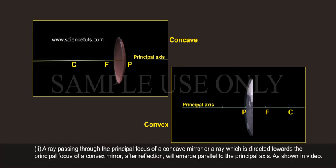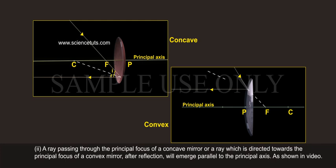Second, a ray passing through the principal focus of a concave mirror or a ray which is directed towards the principal focus of a convex mirror after reflection will emerge parallel to the principal axis as shown in video.